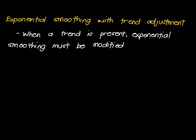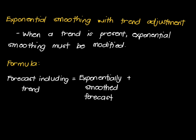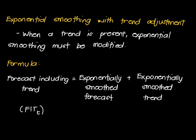Let's define first. This is used when a trend is present. So exponential smoothing must be modified — since there's a trend involved, you have to also include the adjustment of the trend. The formula is: the forecast including trend (FIT_T) is equal to the exponentially smoothed forecast (F_T) plus the exponentially smoothed trend (T_T).